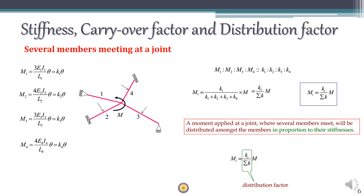Now let's see what happens when several members meet at a particular joint. Consider a common point O where four members meet. Members 1 and 3 have a hinged far end, so their stiffness k1 and k3 equals 3EI/L for the respective members. Members 2 and 4 have a fixed far end, so their stiffness k2 and k4 equals 4EI/L.